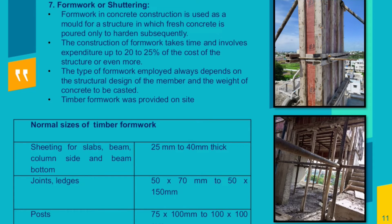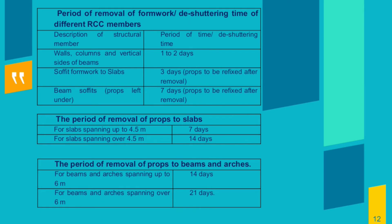Formwork or shuttering: formwork in concrete construction is used as a mold for a structure in which fresh concrete is poured only to harden subsequently. The construction of formwork takes time and involves expenditure of up to 20–25% of the cost of a structure or even more. Timber formwork was provided on site. Period of removal of formwork: walls, columns, and vertical sides of beams take 1–2 days; soffit formwork to slabs takes 3 days; beam soffits take 7 days. Props to slabs spanning up to 4.5 meters: 7 days; spanning over 4.5 meters: 14 days. Props to beams and arches spanning up to 6 meters: 14 days; spanning over 6 meters: 21 days.